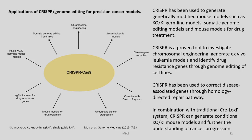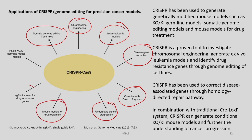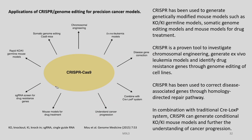CRISPR-Cas9 can have a huge impact in cancer research. The various applications of CRISPR genome editing for precision cancer models include rapid knockout, knockin, germline mouse model generation, somatic genome editing, for chromosomal engineering, ex vivo leukemia models, disease development, disease gene correction combined with the Cre-lox system, understanding cancer progression, developing mouse models for drug testing and treatment, and sgRNA screens for drug-resistant genes. CRISPR has been proven as a tool to investigate chromosomal engineering, generate ex vivo leukemia models, and identify drug-resistant genes.